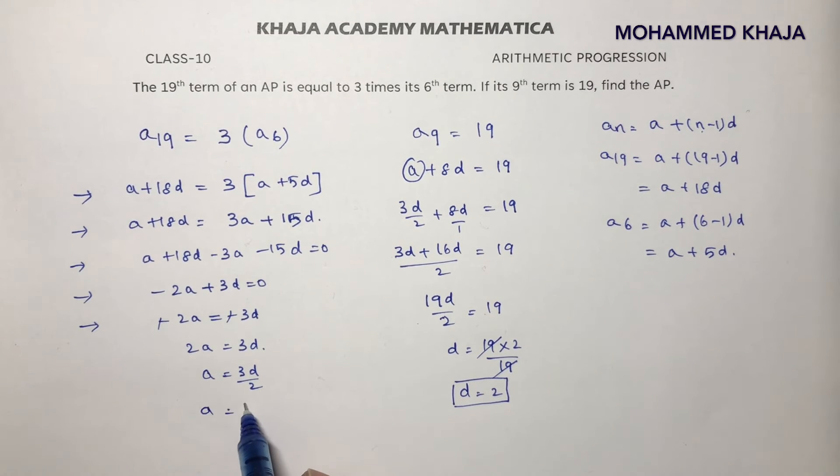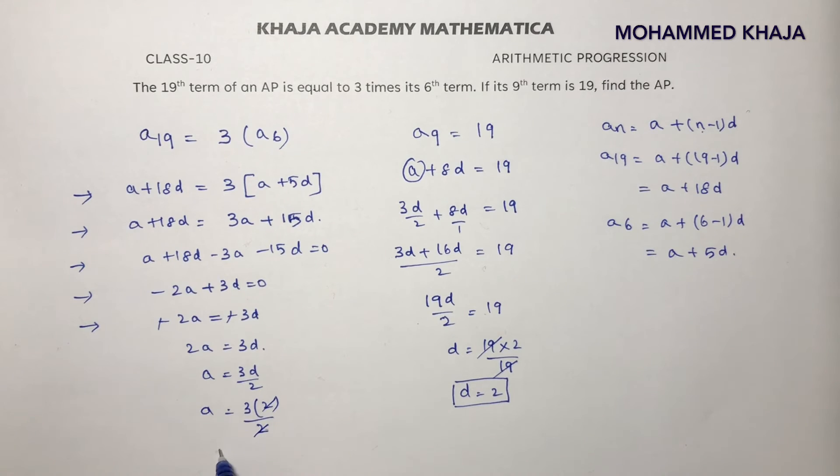A equals 3 into D, which is 2, divided by 2. The 2s cancel, so the value of A is 3.